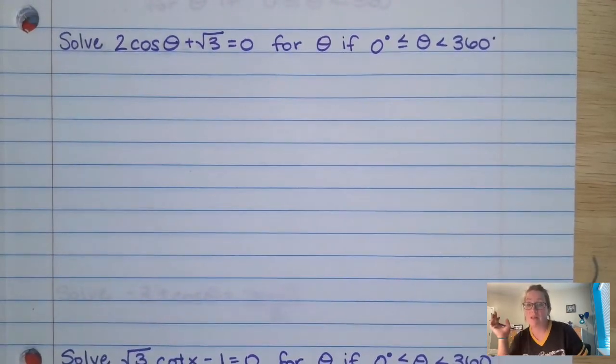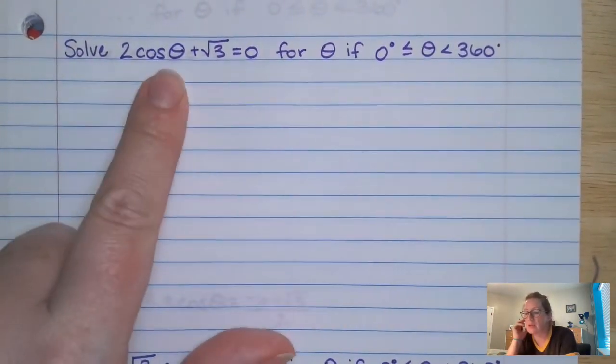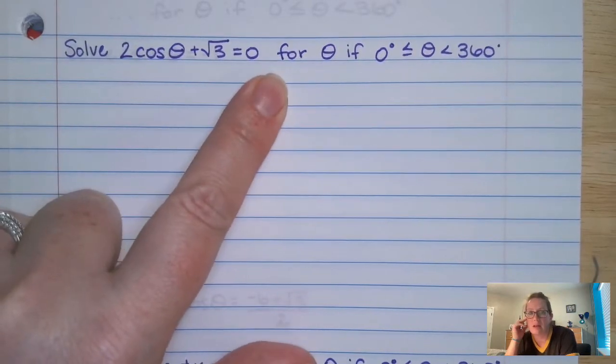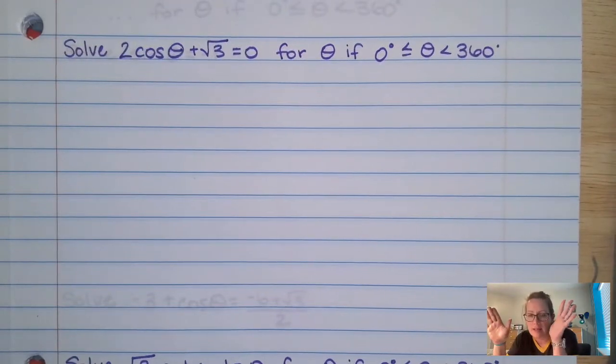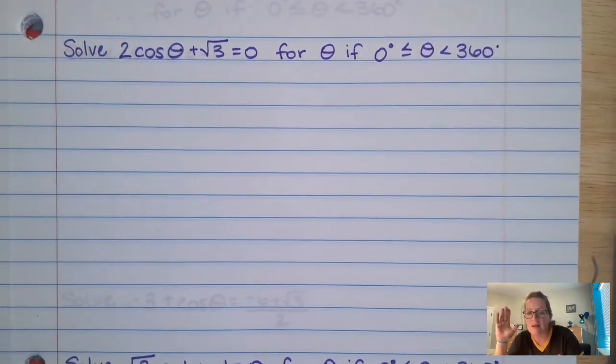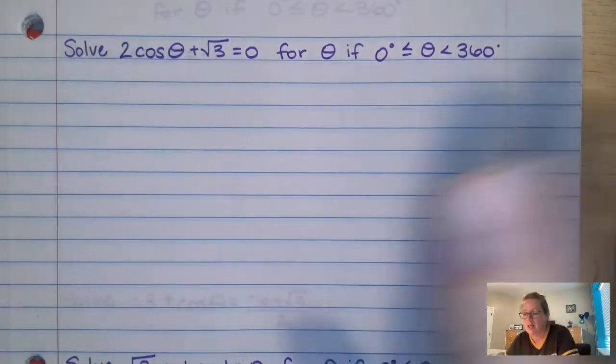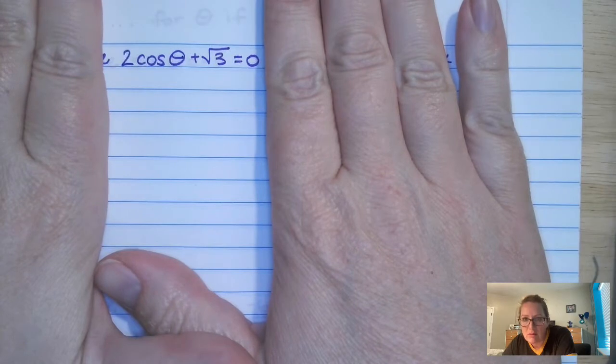All right, guys, we're going to start solving trig equations, one of my favorite things about trig. So we have this equation 2 cosine theta plus root 3 equals 0, and we need to solve for theta.